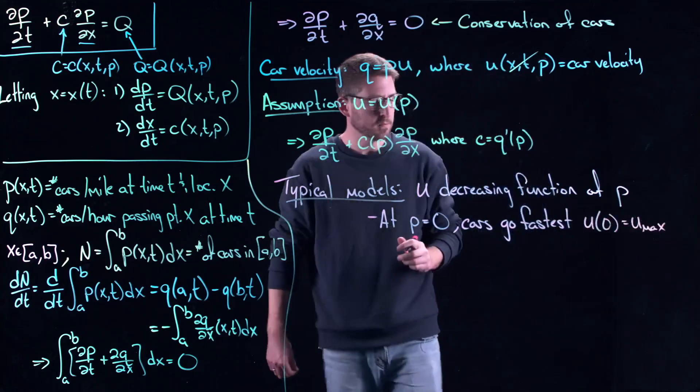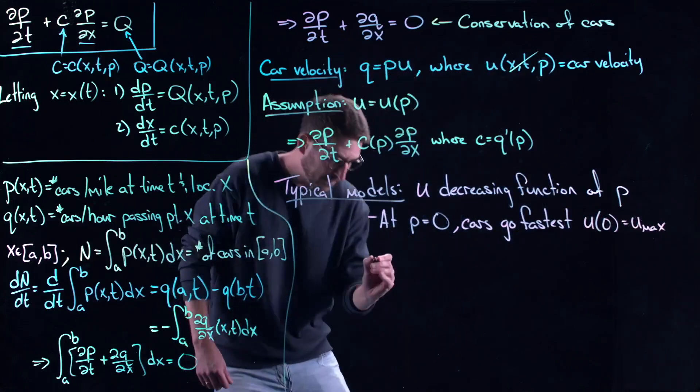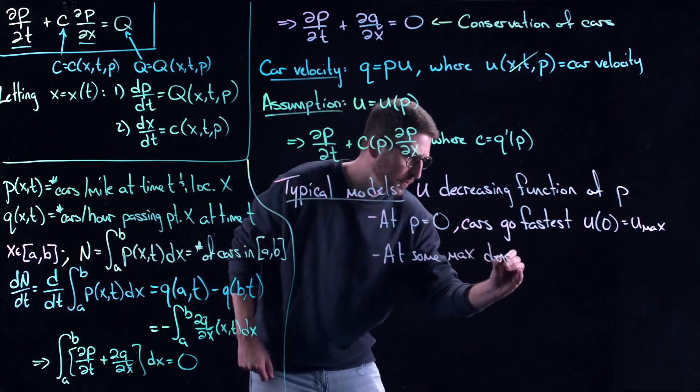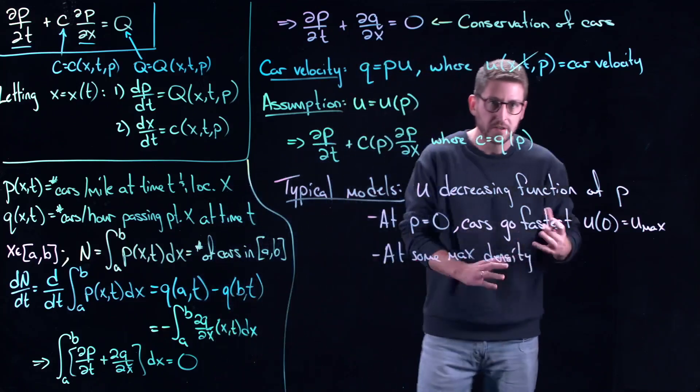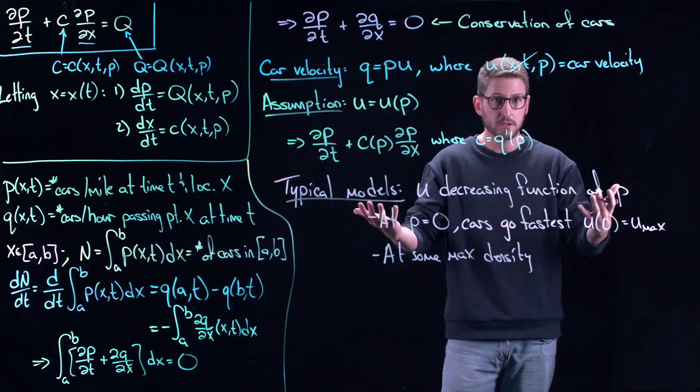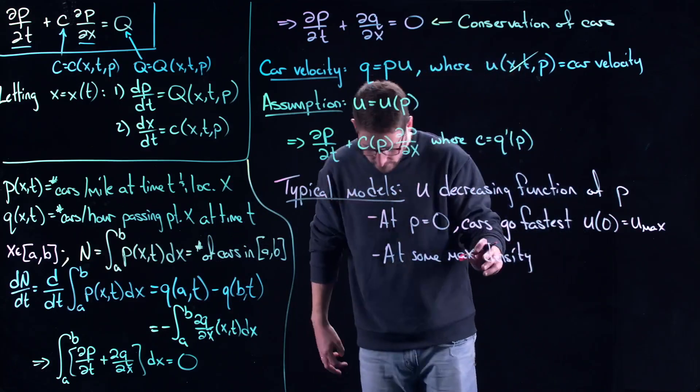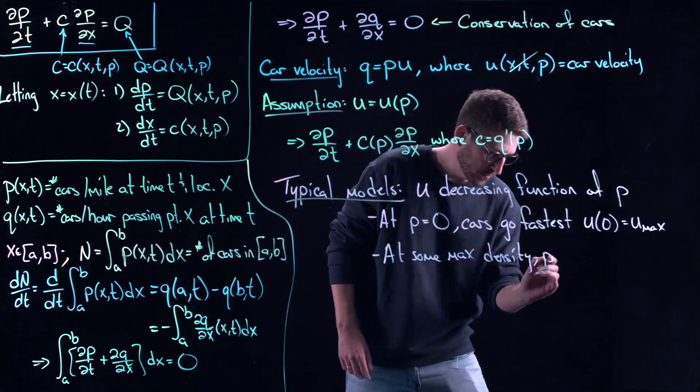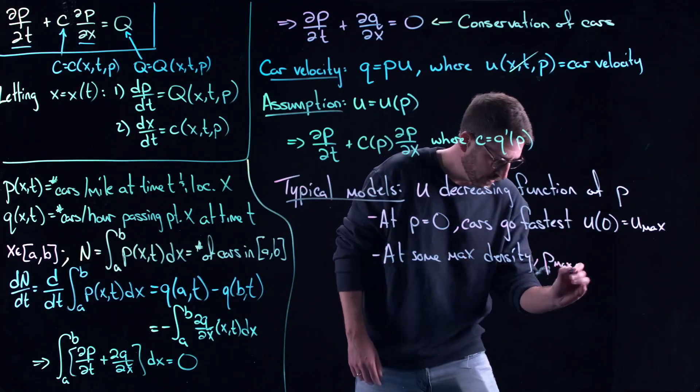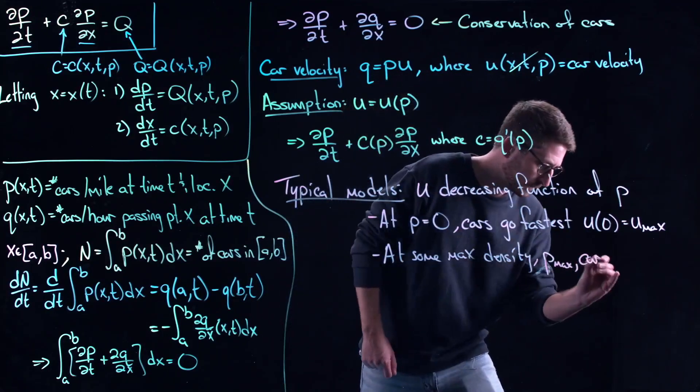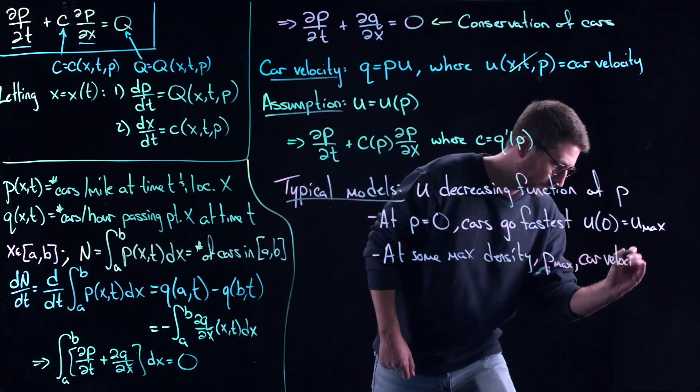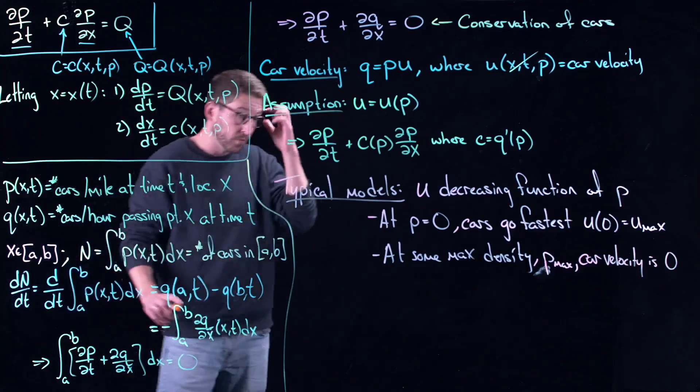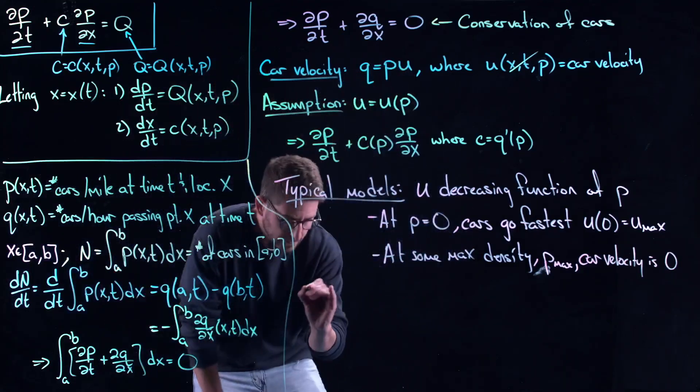And then at some max density, bumper to bumper traffic, whatever the worst possible density you can fit on the highway, because there is a limit - cars take up so much space. Whatever the maximum density on the highway is, we'll call that p max. Well then, car velocity is zero. Bumper to bumper traffic, it's so dense, nobody's moving at all. And so, let's look at the simplest case.